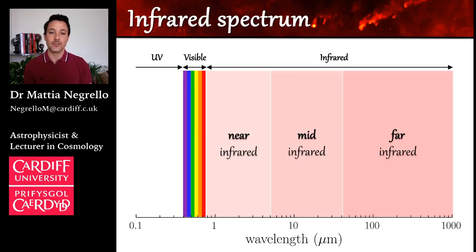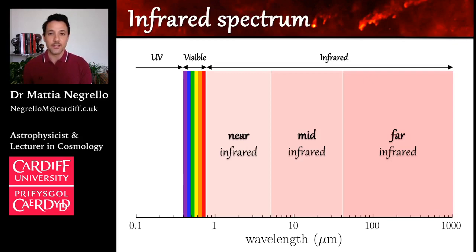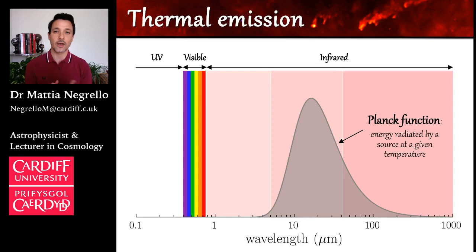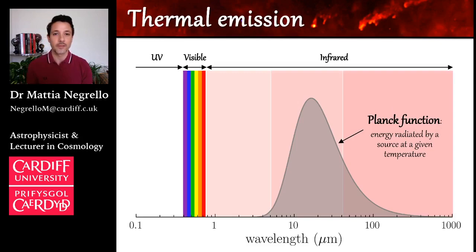So what's the origin of infrared radiation in the universe? Well, infrared light is associated with thermal emission. All bodies in the universe, because they have a temperature, emit thermal radiation. This thermal radiation — the energy radiated by an object at a given temperature — is described by a famous function in physics, which is the Planck function, here represented by the gray shaded region. This Planck function is characterized by a prominent peak, and the position of this peak depends on the temperature of the body.